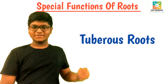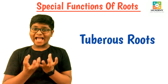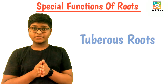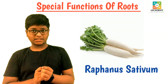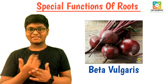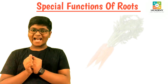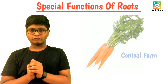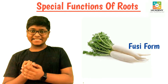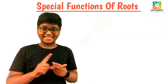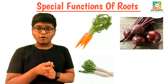Let us learn about tuberous roots. In this kind of roots, the roots store food materials and become more bulky and tuberous. For example, carrot (Daucus carota), radish (Raphanus sativus), and beetroot (Beta vulgaris). In carrot we see the conical form of roots, in beetroot the napiform roots, and in radish the fusiform root. These are tap roots which store food materials.